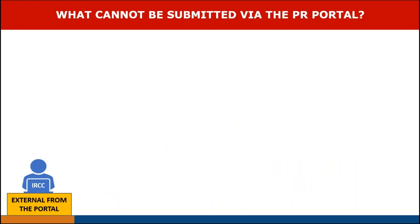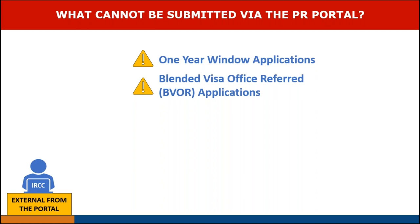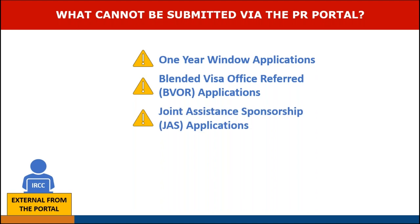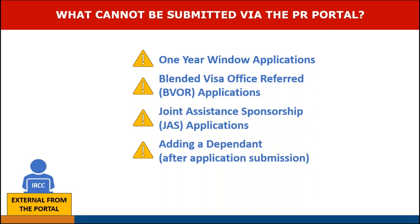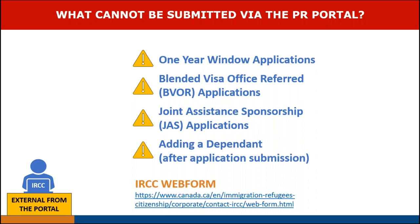What cannot be submitted through the Permanent Residence Portal? One-year window applications — submit these via email as per the current process. Blended Visa Office referred applications — also submit via email as per the current process. Joint assistance sponsorship applications — sponsorship agreement holders will submit these via email as per the current process. When a new dependent needs to be added after the application has been submitted to IRCC, you will need to email IRCC external from the portal. For any other updates on the sponsorship, sponsors should follow the current process, which is to submit changes via the IRCC web form.